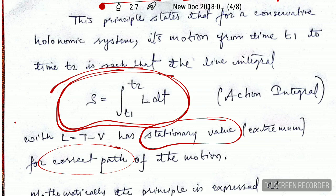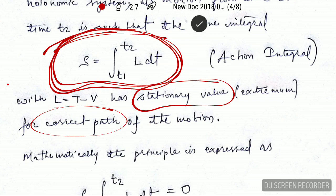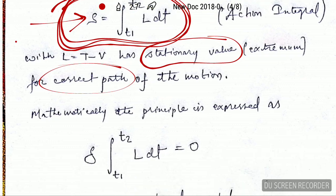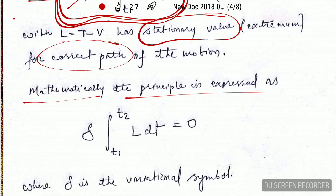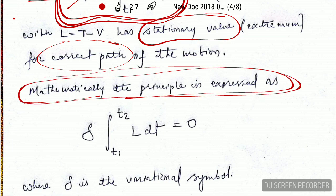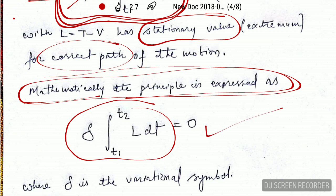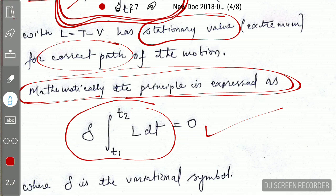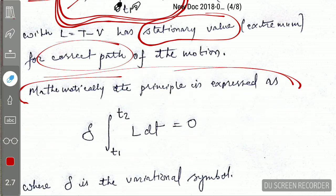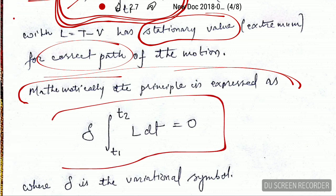For the correct path, this action integral is constant — that means it is stationary. So if we try to vary this integral, that variation should give us zero. That is why mathematically the principle is expressed as δS = 0. This equation is called Hamilton's principle and is a very important equation in classical mechanics, used to derive many important formulas.